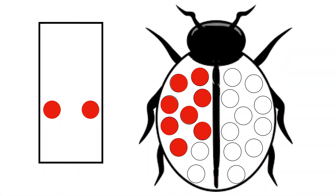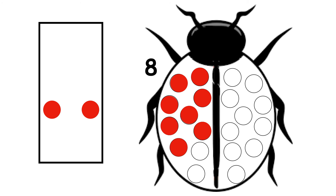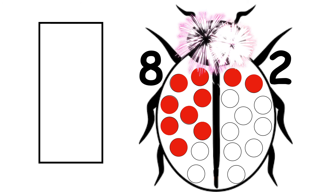Ladybird has 8 spots. 1, 2, 3, 4, 5, 6, 7, 8. How many more does she need to have 10? 1, 2. 8 and 2 make 10.